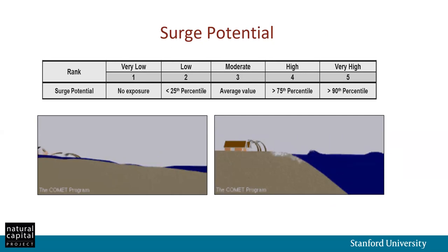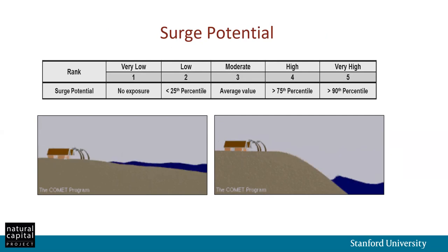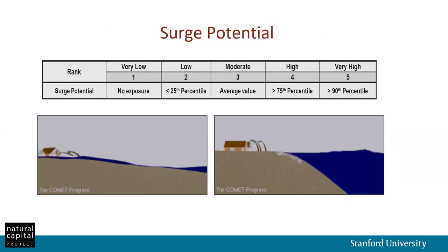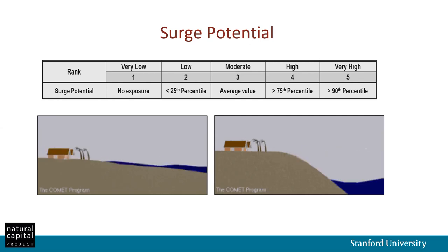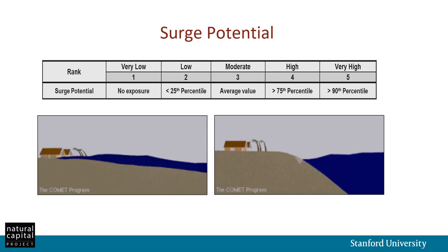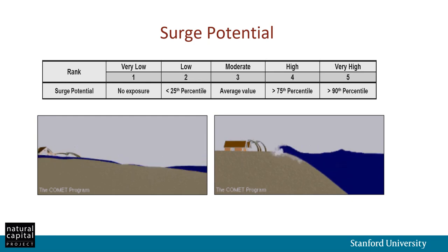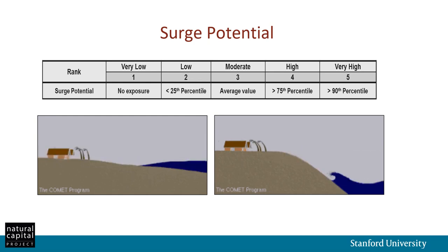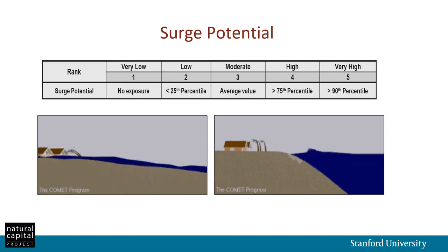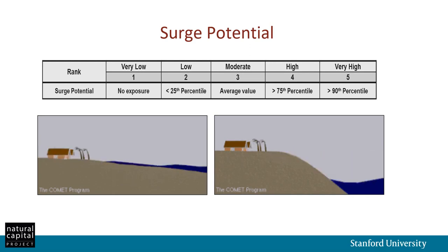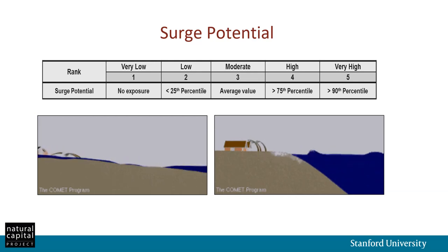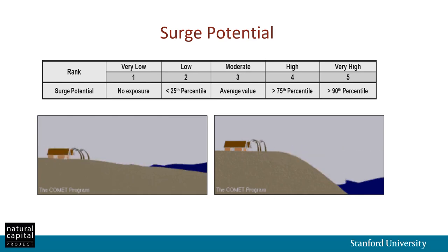The model also looks at the potential for exposure to storm surges. As a proxy, it uses the distance from the coastline to the edge of the continental shelf. When you have a long, shallow extent where waves can build up, you are much more likely to see high storm surges than if you have very steep drop-offs. The rank is generated based on the distance from the coast to the edge of the shelf, where large shallow extents contribute to greater risk and a higher exposure rank, while short distances and steep drop-offs contribute less.